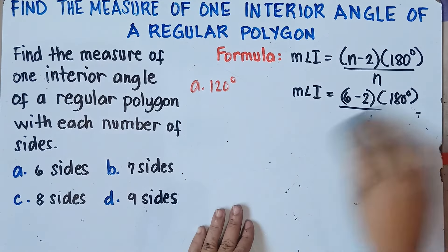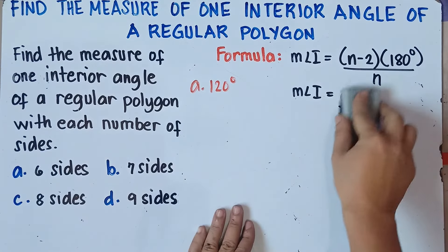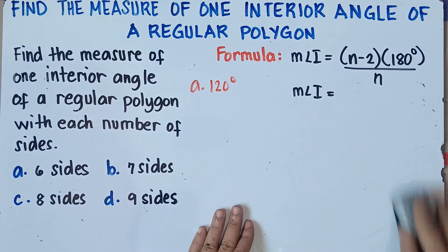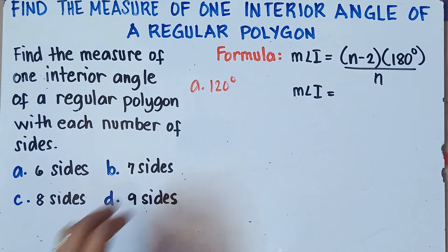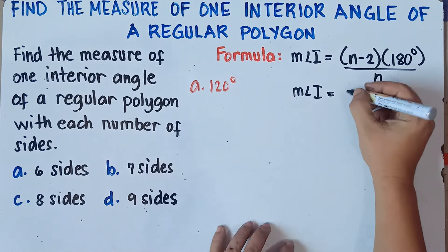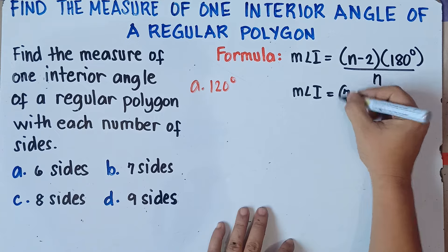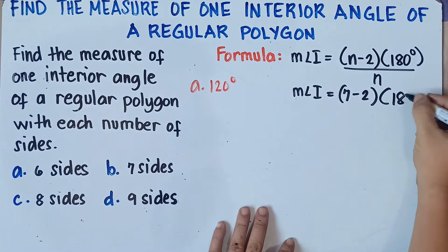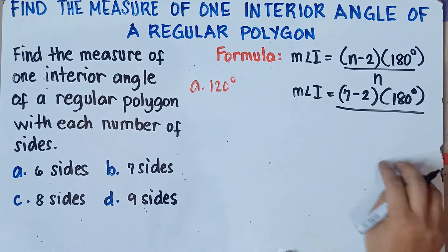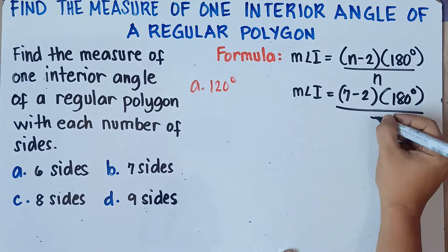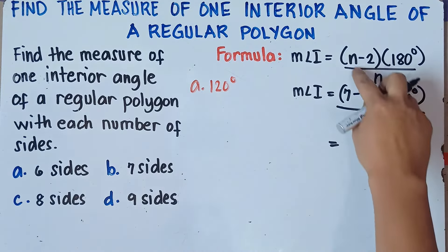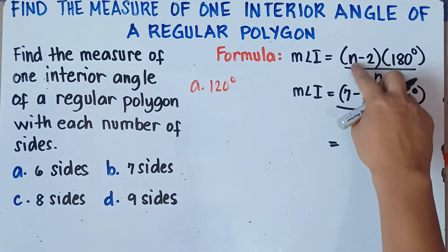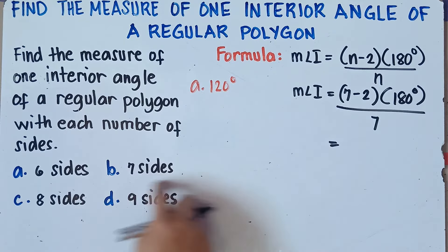Now let's try letter B. What if we need to find the measure of one interior angle for a polygon with 7 sides? Substitute n equals 7 into the formula: (7 minus 2) times 180 degrees, over 7. Remember, n represents the number of sides, so we have 7 sides.